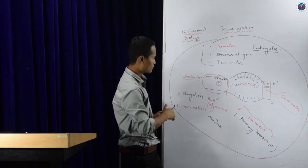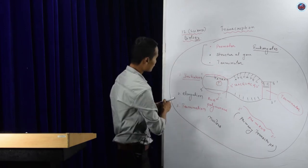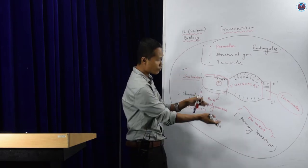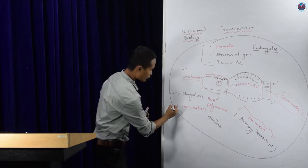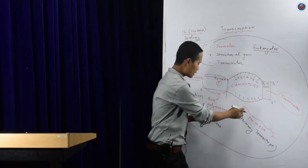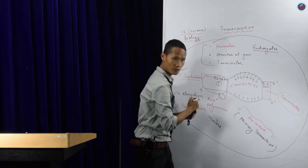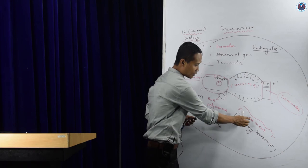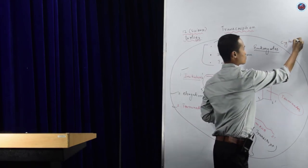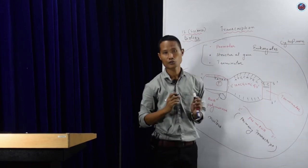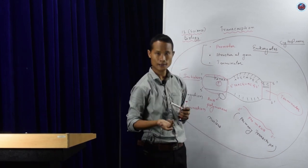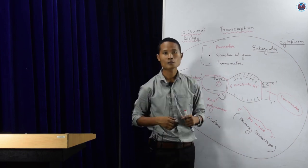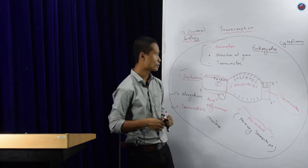To highlight what we have discussed: the first step is initiation, where sigma factor is very important, then RNA polymerase comes, then rho factor binds, then elongation starts, and finally termination occurs at the GC-rich stretch region where the rho factor leaves RNA polymerase. This whole process takes place in the nucleus, and the mRNA will then come out to the cytoplasm after modification. In the next video, we'll discuss the process of modification in eukaryotes and why it is important.